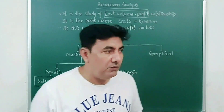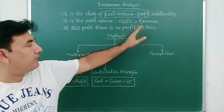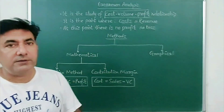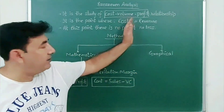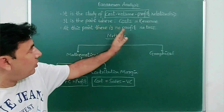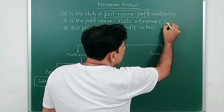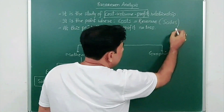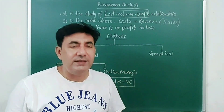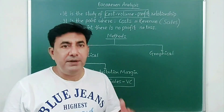First of all, what is the meaning of break-even analysis? It is the study of cost-volume-profit relationship. You have to take care of these three words: cost, volume, profit. The entire break-even analysis depends on this. It is the point where cost is equal to revenue — revenue here means your sales volume, the realized value of sales. When you buy goods in the market, that price is called revenue in break-even analysis.